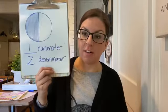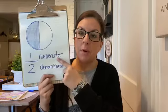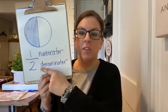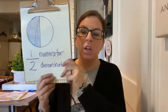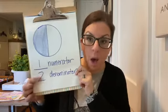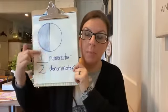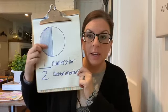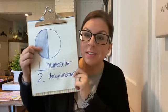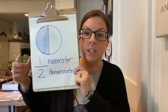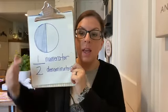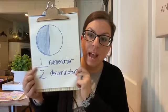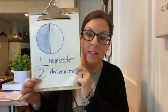Let's talk about what the parts of a fraction are called. This top number is called the numerator — let's say that together: numerator. The bottom number is called the denominator. The denominator tells you how many pieces the whole is broken up into. The numerator tells you how many of those pieces are shaded in, or how many are used, or how many are eaten if it's something like food. In this case, 1 is the numerator and 2 is the denominator because there are 2 pieces. So 1 out of the 2 pieces is shaded in.